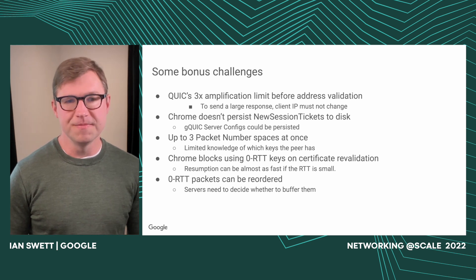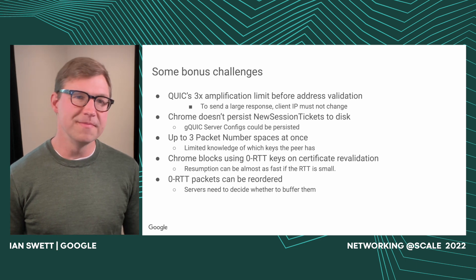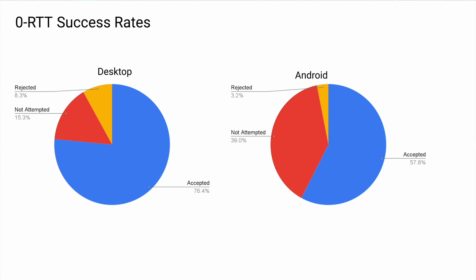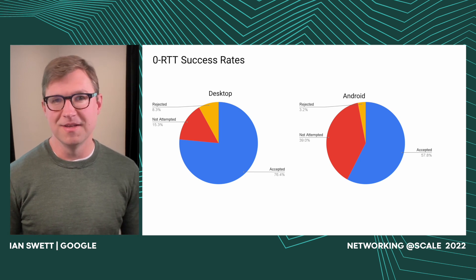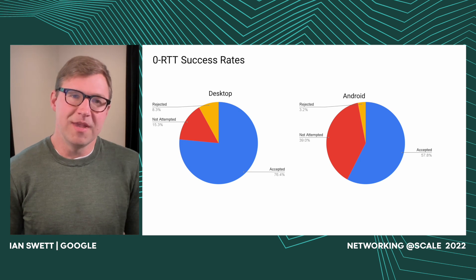0-RTT packets can also be reordered, and servers need to decide whether to buffer them or discard them. Looking at 0-RTT success rates for Chrome, we have over a 75% success rate on desktop, with under 10% being rejected. The majority of unsuccessful cases — it just wasn't attempted, which presumably means Chrome didn't have the information. On Android, almost 40% of the time we didn't even try 0-RTT. This comes from the fact that Chrome is not persisting this information to disk, so every time Android Chrome restarts, you can't do 0-RTT.